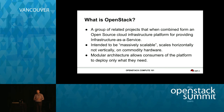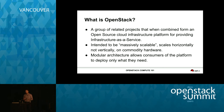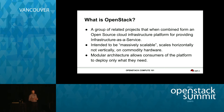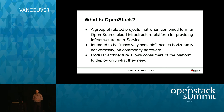So what is OpenStack? It's a group of related projects that when combined form an open source infrastructure-as-a-service cloud platform. It's intended to be massively scalable — most if not all of the OpenStack projects scale horizontally. When you want to scale up, you add more. With that in mind, we also have a modular architecture which allows us to use a variety of backends — in the compute case, virtualization backends, container backends, and also bare metal.